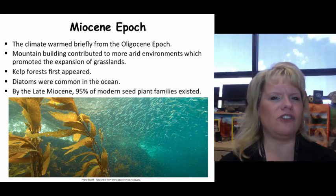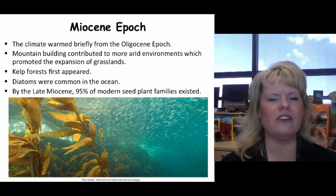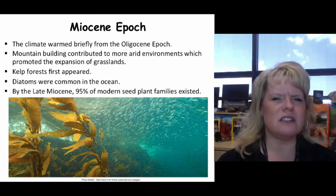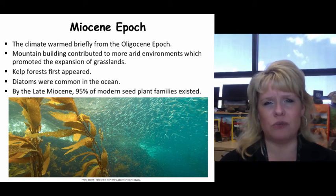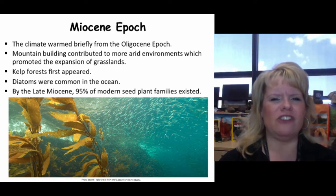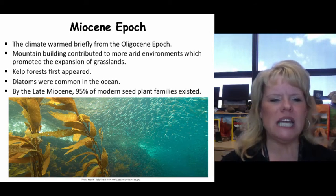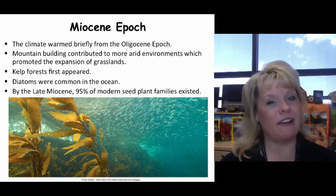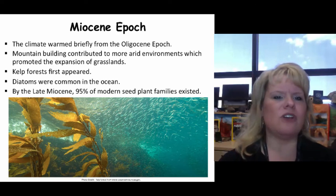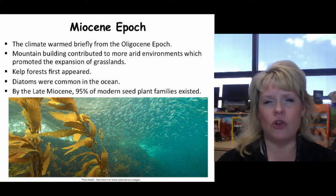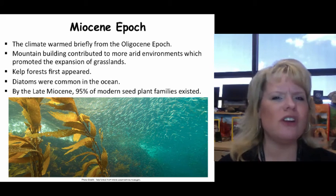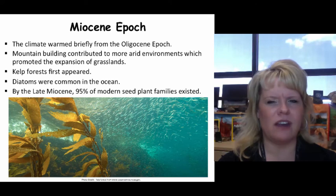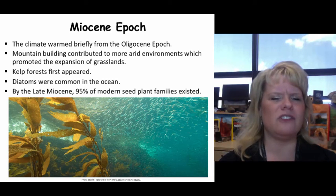In the oceans, a new life form called kelp forests began to radiate. Kelp is part of the base of the food chain — sea otters don't eat kelp, but they eat sea urchins, which do. Kelp is a type of algae, and sea urchins eat it to help keep the water clean. Also very noteworthy in the Miocene, diatoms made a comeback after the Cretaceous mass extinction in a huge way, creating large concentrations of diatomaceous material. By the late Miocene, we had 95% of what you'd recognize as modern seed plants.